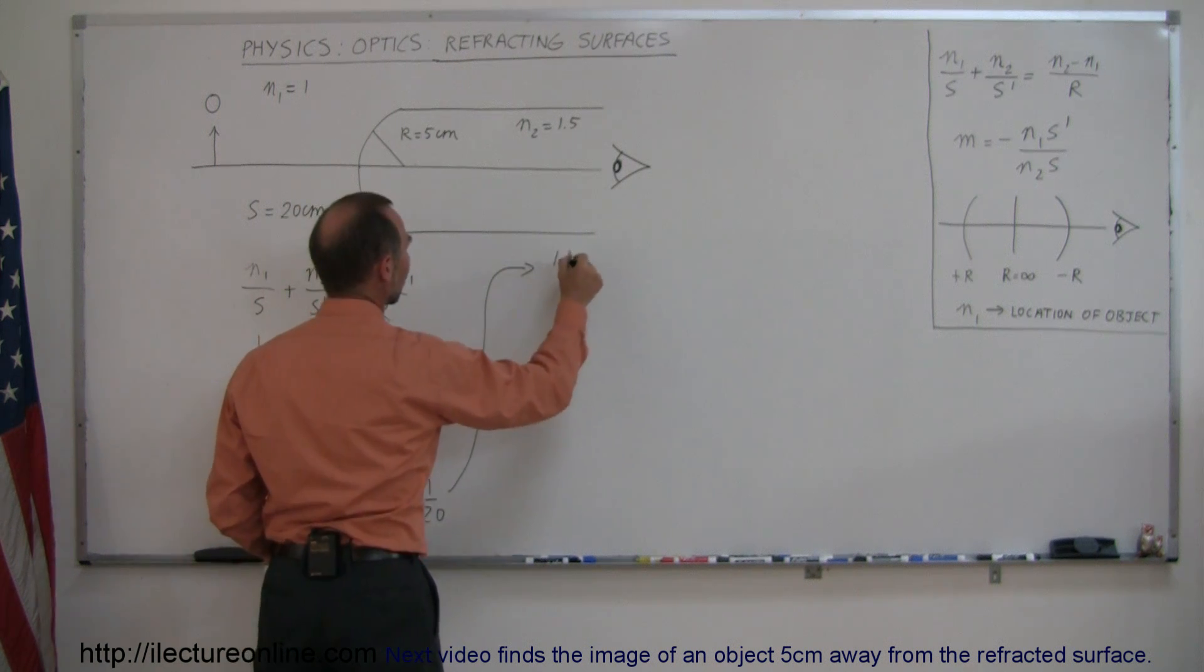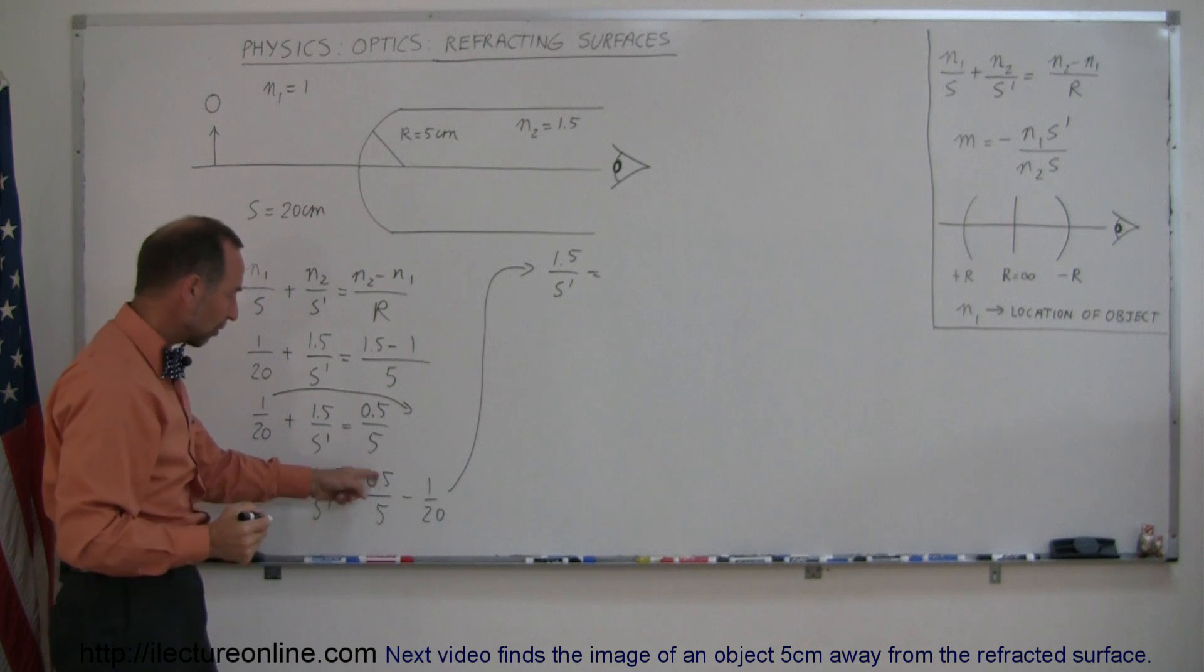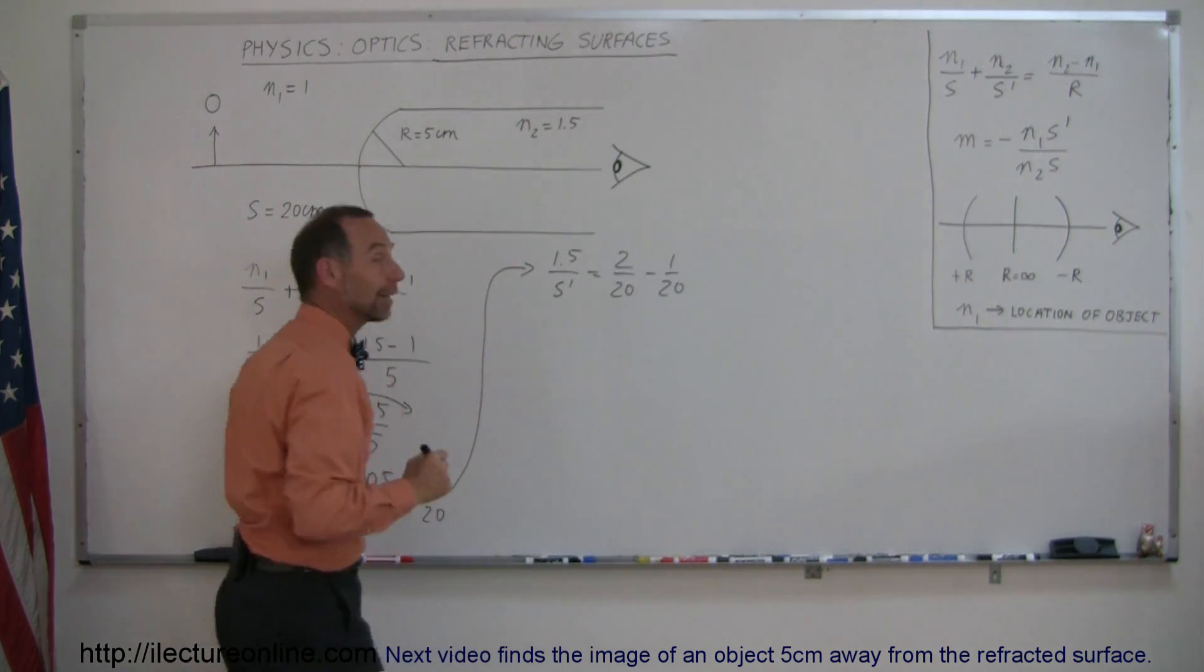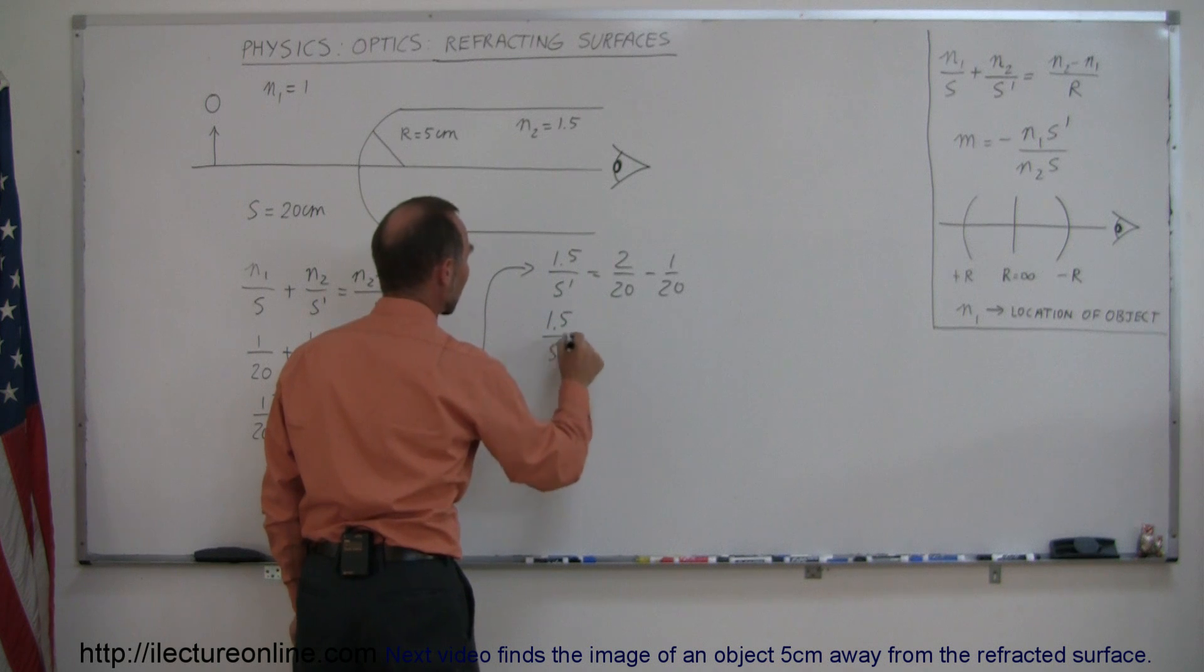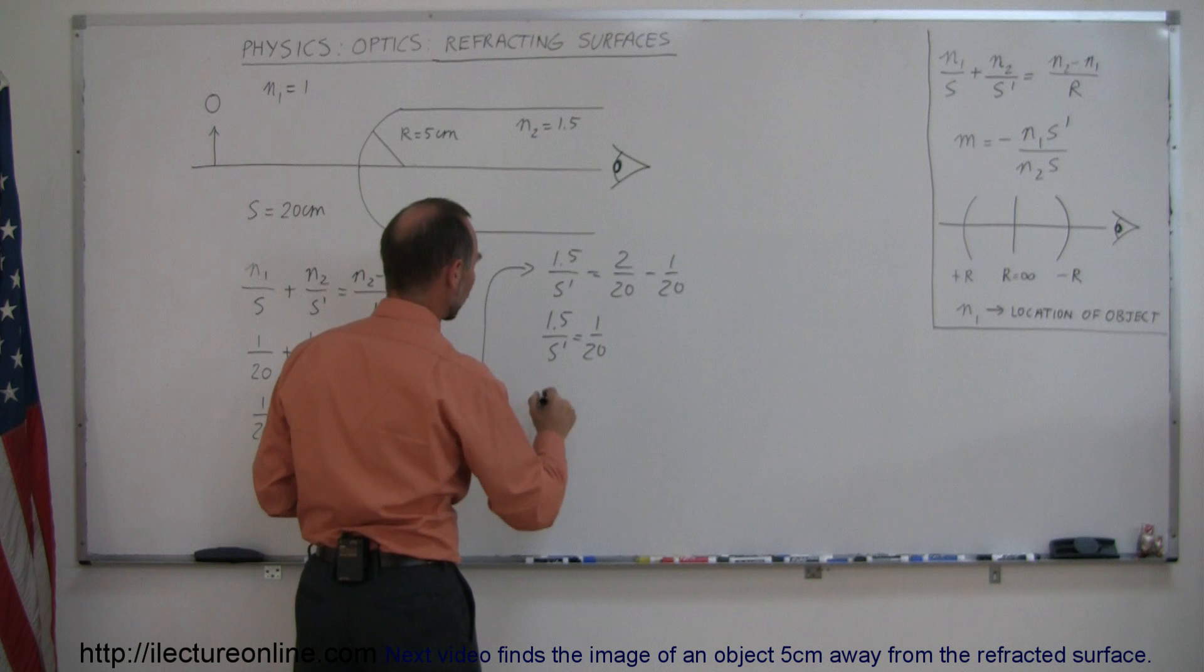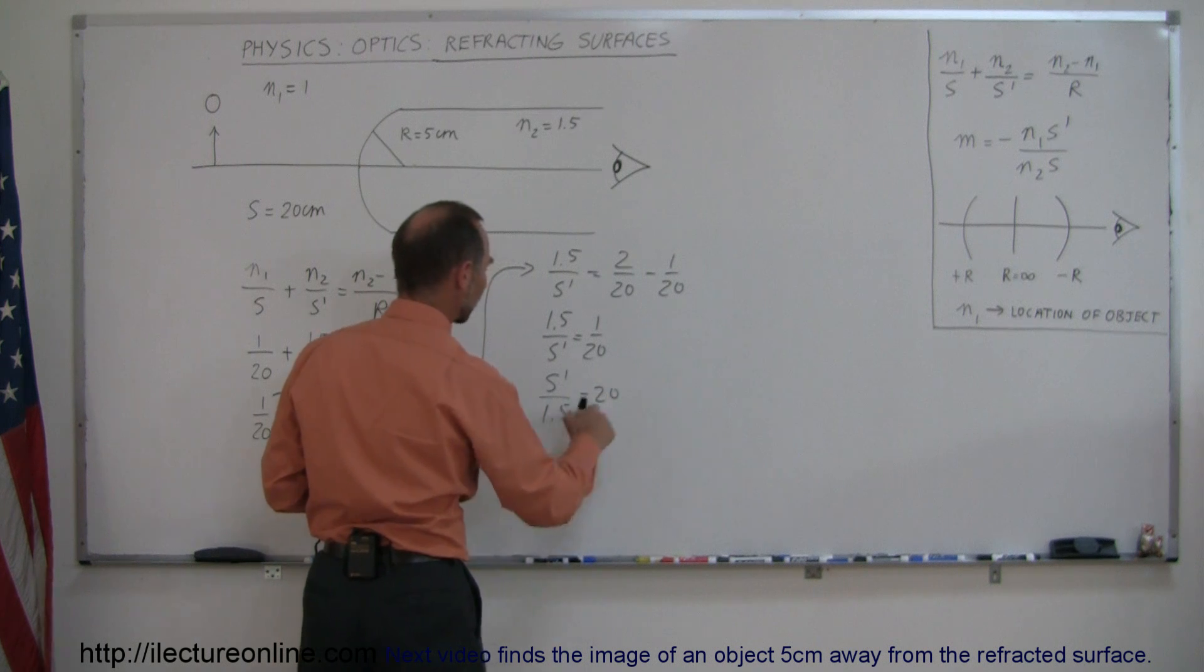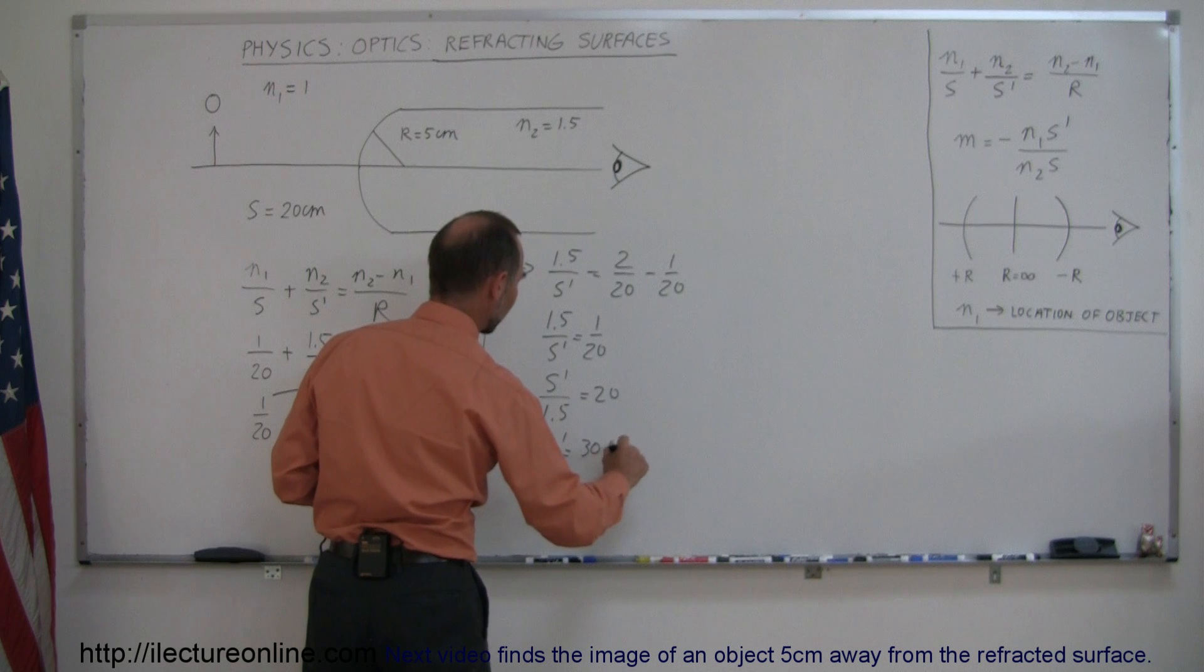So we have 1.5 over S prime is equal to, multiplying both the top and the bottom by 4, we get 2 over 20 minus 1 over 20, and then we can combine the right side. So that becomes 1.5 over S prime is equal to 1 over 20, and then flipping the equation over, we get S prime over 1.5 equals 20, and then cross-multiplying, we get S prime is equal to 30 centimeters.